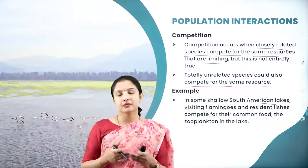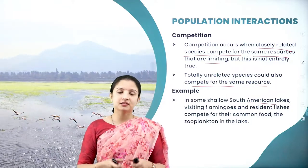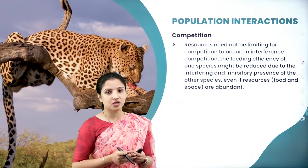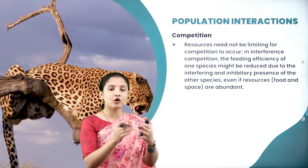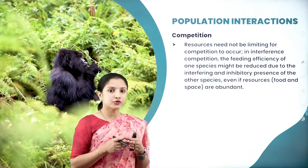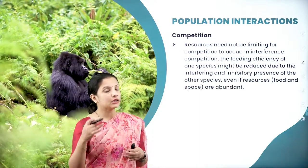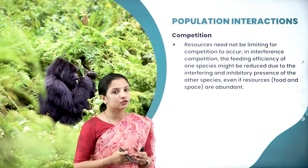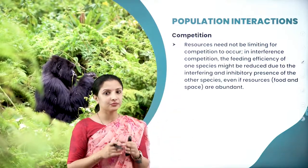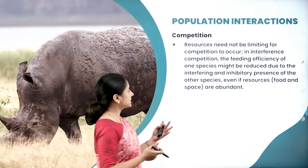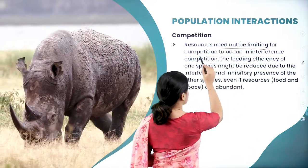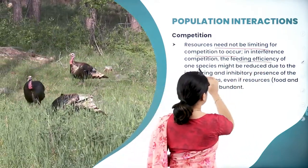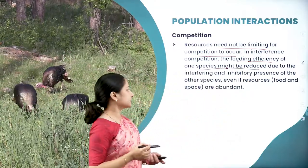Competition means it is not just between two related species but also between two entirely different species. The definition that competition occurs between two related species on the same limiting resource is not entirely true, because competition can also occur between two entirely different species and even when the resource is not limiting. The feeding efficiency of one species might be reduced due to the interfering and inhibitory presence of another species — that can also lead to competition.